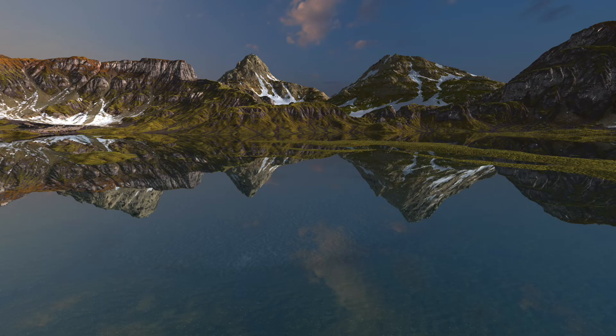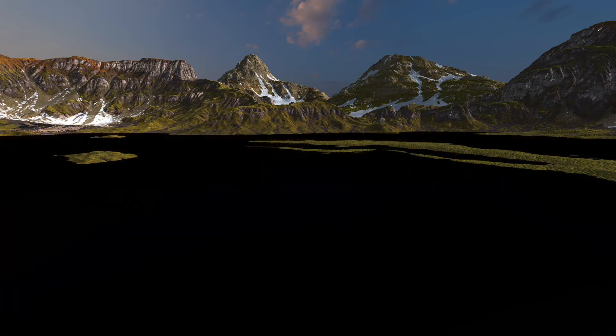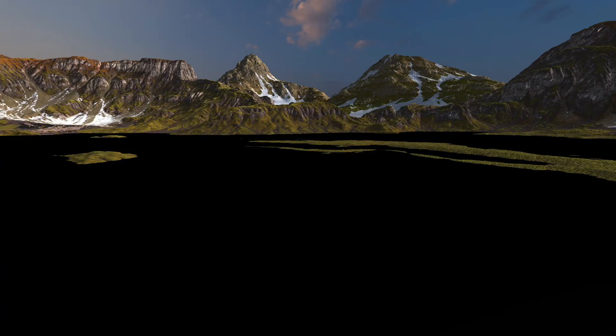Here's a computer graphics mountain scene. If we apply our simple ray tracing algorithm, we get an image like this. Why is the lake black? It's missing the reflection of the mountain. That requires two bounces of light.